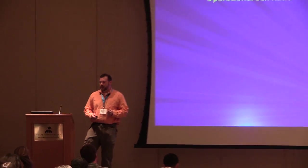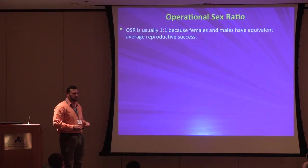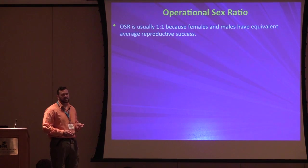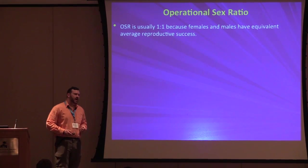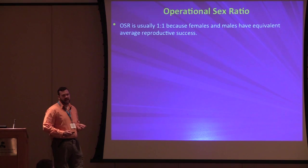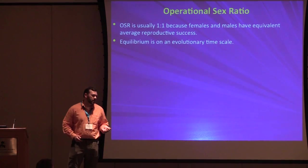The operational sex ratio is simply the ratio between males and females in a population, sometimes defined by reproductive availability. This is usually balanced because over evolutionary time males and females have equivalent reproductive success — every offspring has one mother and one father.